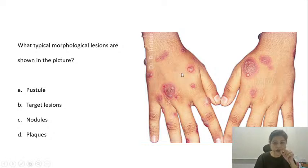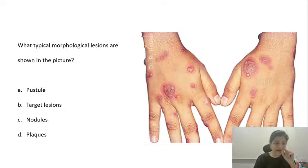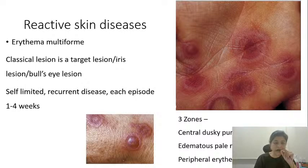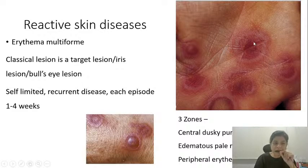What is a target lesion? A target lesion is also called a bullseye lesion or an iris lesion. In a target lesion, the central area shows dusky erythema, then you have a ring of pallor, and then there is a ring of erythema surrounding it. That is the classical target lesion. In this picture, you can see they are bullseye target lesions. There can be variations in the target lesions as well. Please remember that target lesions are seen in cases of erythema multiforme.